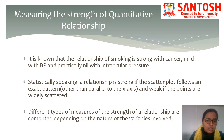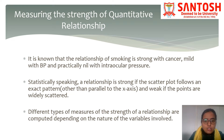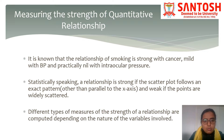Continuing to this topic, we will first talk about measuring the strength of a quantitative relationship. As all of you know, the relationship of smoking is strong with cancer, mild with BP, and practically nil with intraocular pressure. These kinds of relationships can be measured with some biostatistical tools. If these relationships are quantitative, we can talk about correlation and regression. However, in qualitative type of variables, there are some other measures which we will talk about later.